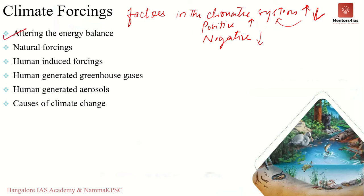The power of a process to alter the climate is estimated by its radiative forcing — that is, the change in the earth's energy balance due to that process. Some climate forcings are positive, causing globally averaged warming, and some are negative, causing cooling. Some, such as the increase in carbon dioxide concentrations, are well known, while others in the form of aerosols are less well understood.